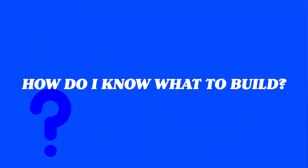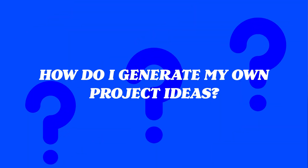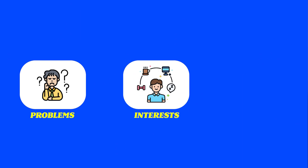One of the best ways to develop your skills as a software engineer and get hired is to build projects. I just made a video about four projects you could build for a portfolio. But this often brings up the question: how do I know what to build and how do I generate my own project ideas? Today I want to talk about three ways to find your own project ideas — your problems, your interests, and your skills.